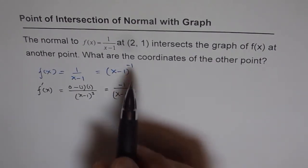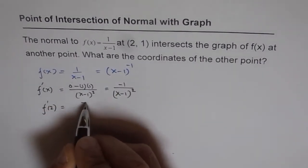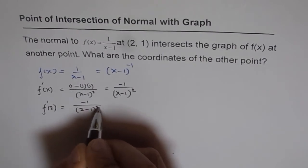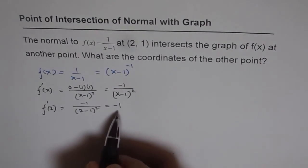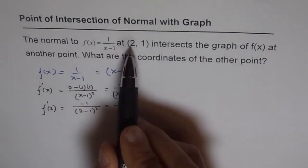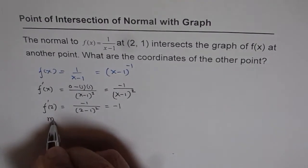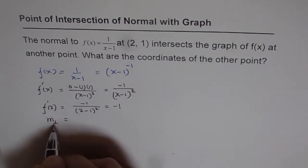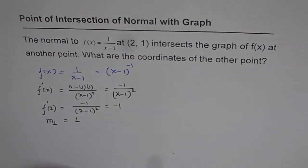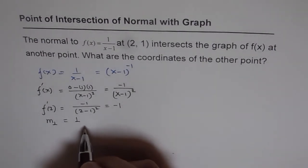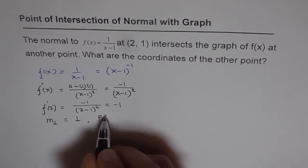Now we need to find the derivative at x equals 2. So f'(2) equals minus 1 over (2 minus 1) whole square, which gives us a value of minus 1. This indicates the slope of the tangent at x equals 2. We are interested in finding the slope of the normal. The slope of the normal will be perpendicular, so it is the negative reciprocal of minus 1, which is going to be 1. Now we need to find the equation of the normal with slope 1 and going through the point (2, 1).